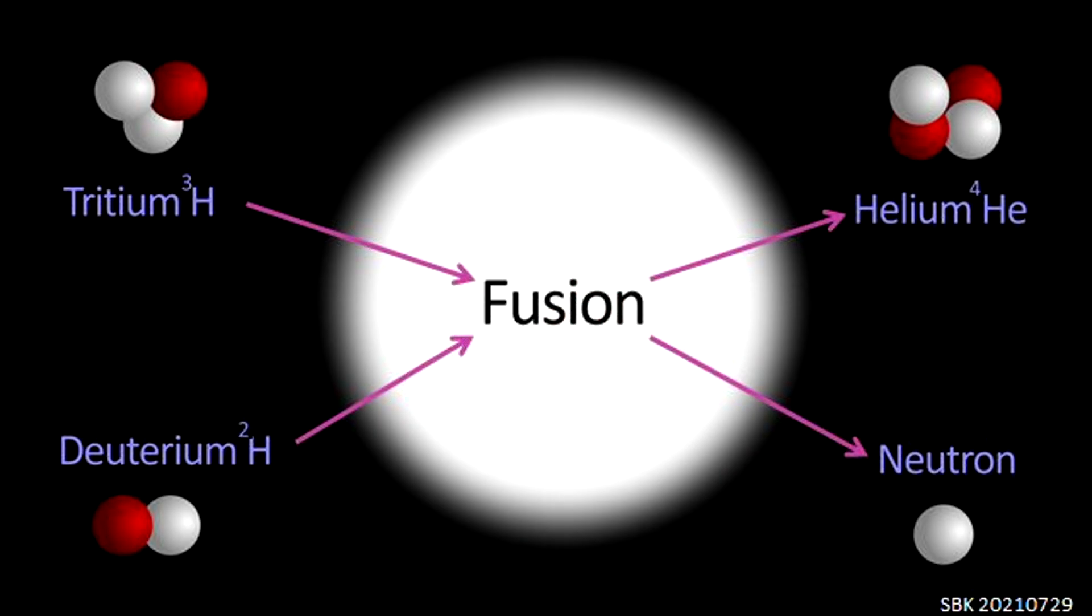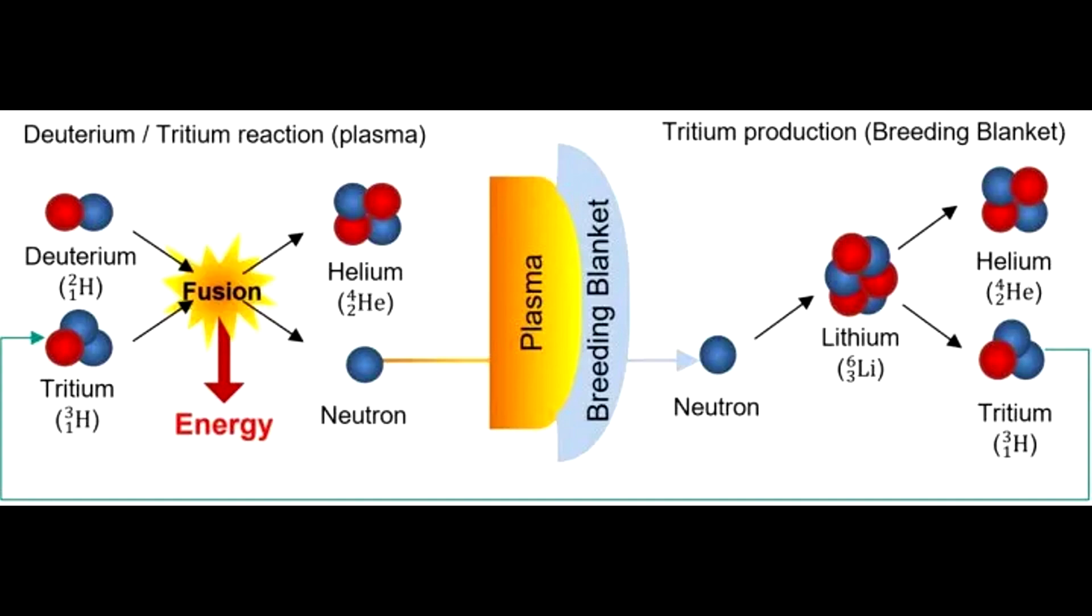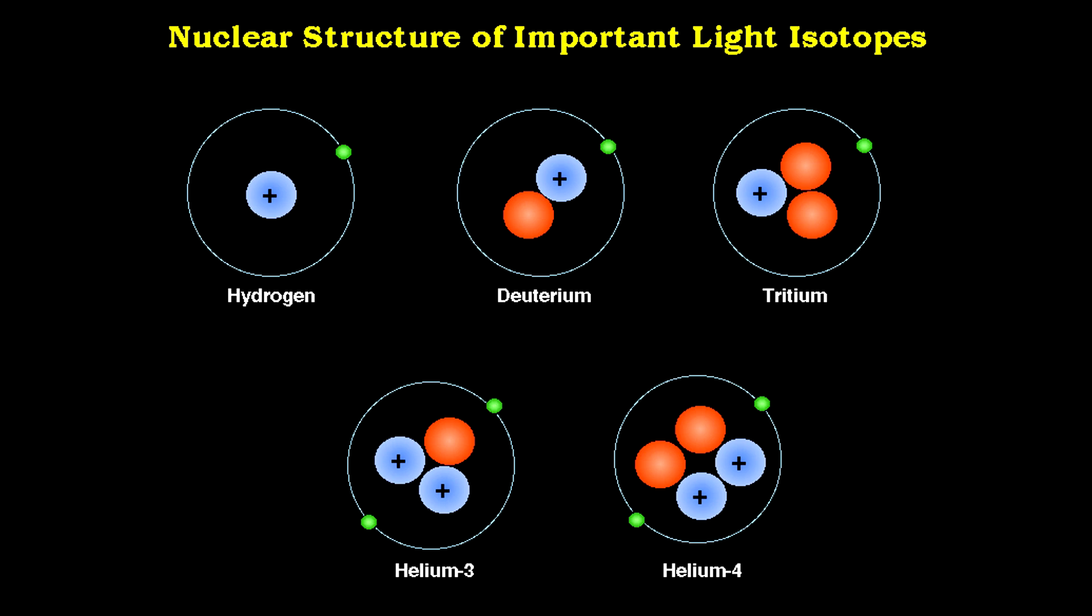When two helium-3 atoms collide, helium-4, two hydrogen atoms, and one more photon are formed.